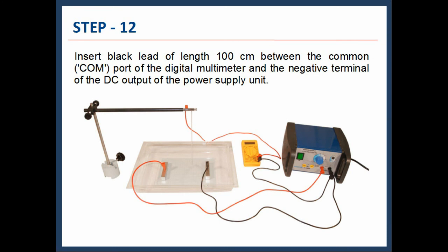In the next step, insert black lead of length 100 centimeter between the common port of the digital multimeter and the negative terminal of the DC output of the power supply unit.